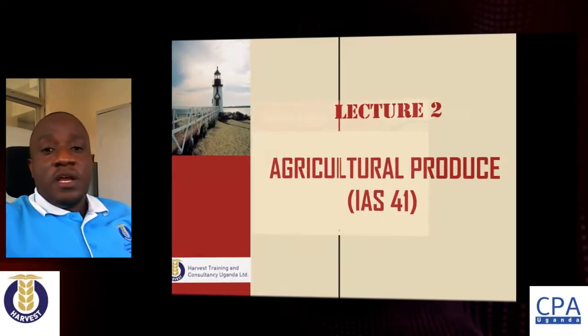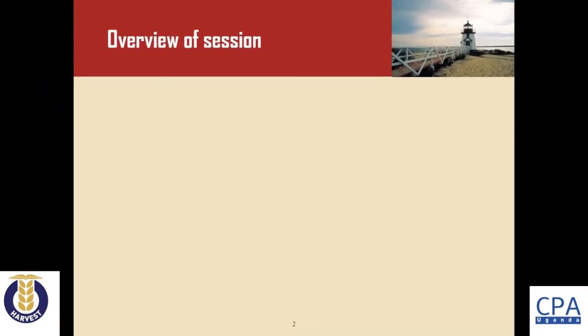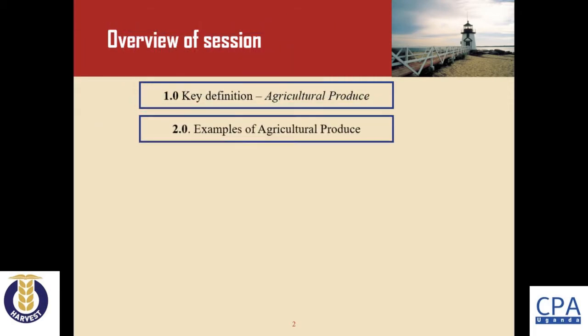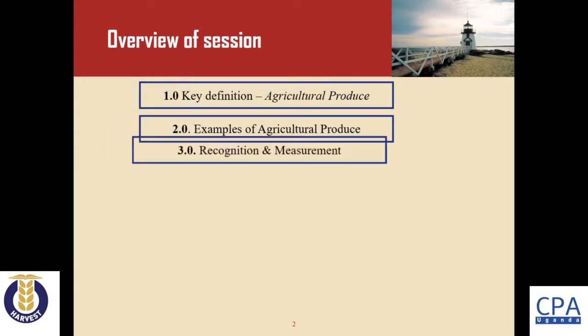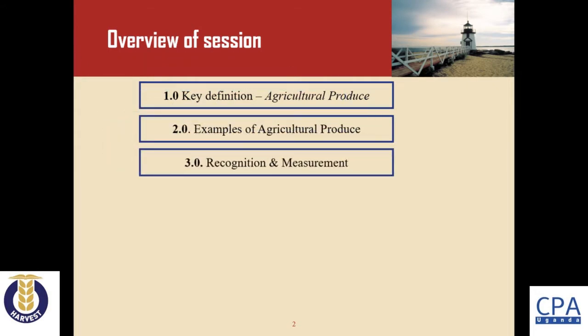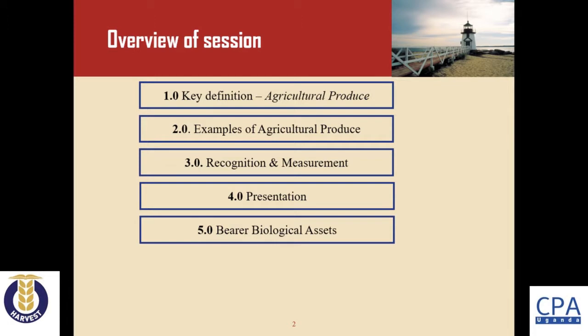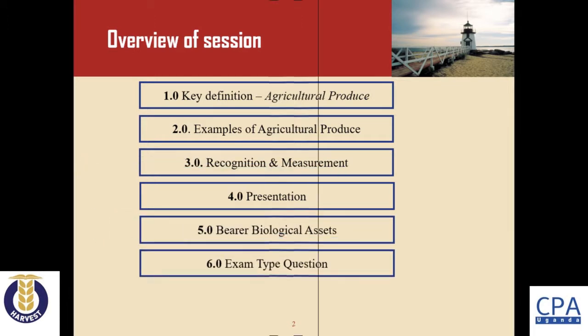Hello everyone and welcome to yet another discussion on IAS 41, which deals with agriculture. This is lecture number two, in which we are going to discuss agricultural produce. We will cover the key definition of agricultural produce, examples, the recognition and measurement criteria given in Accounting Standard 41, presentation requirements, biological assets, and support our discussion with an exam-type question.